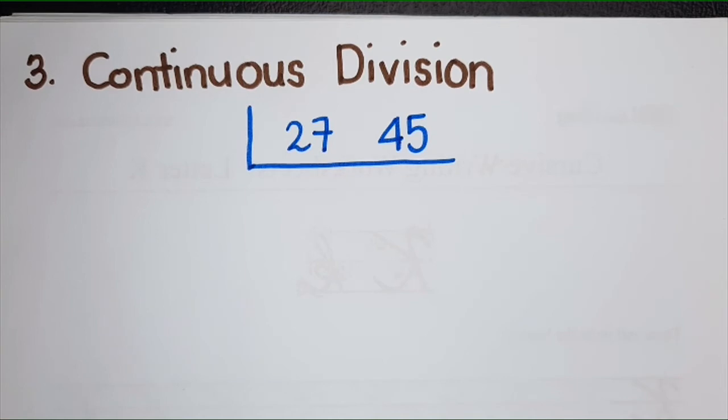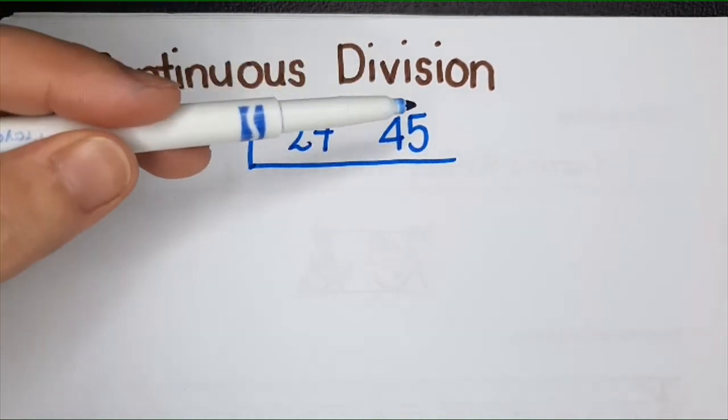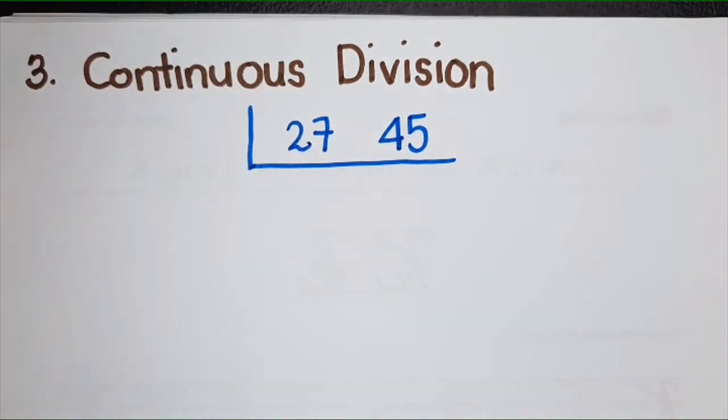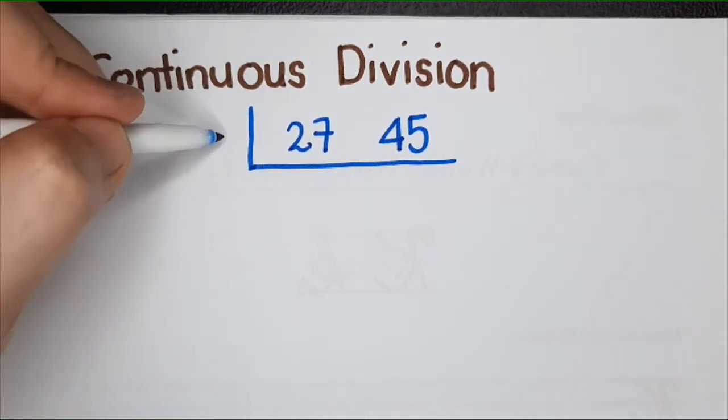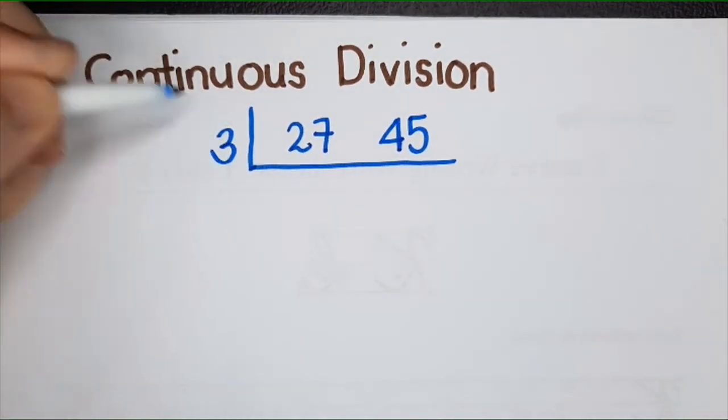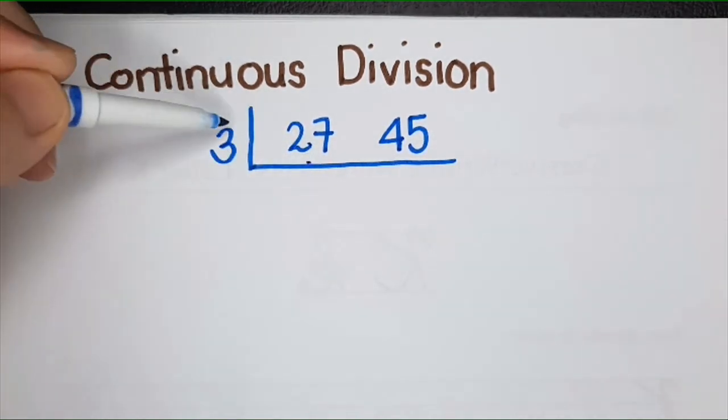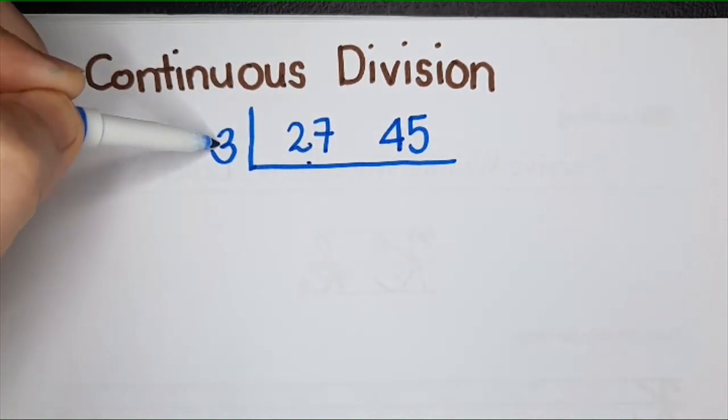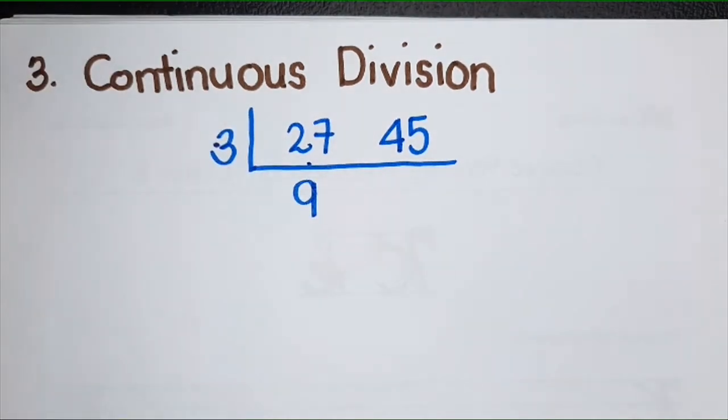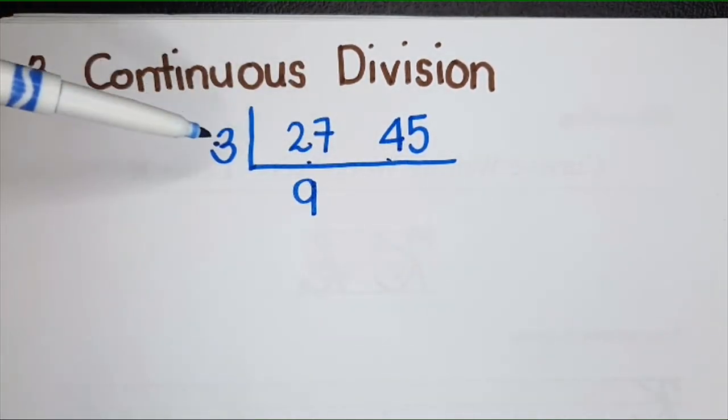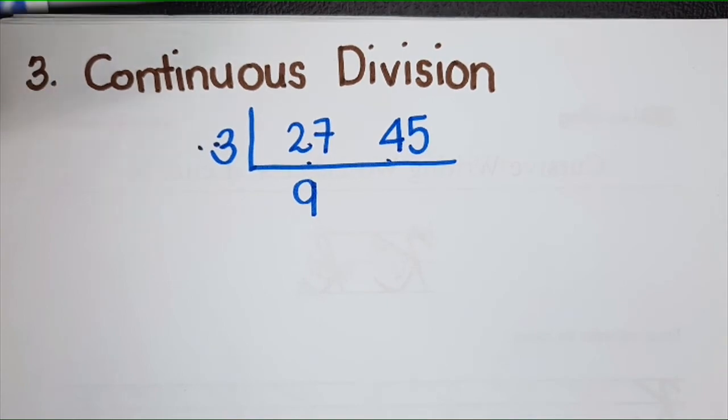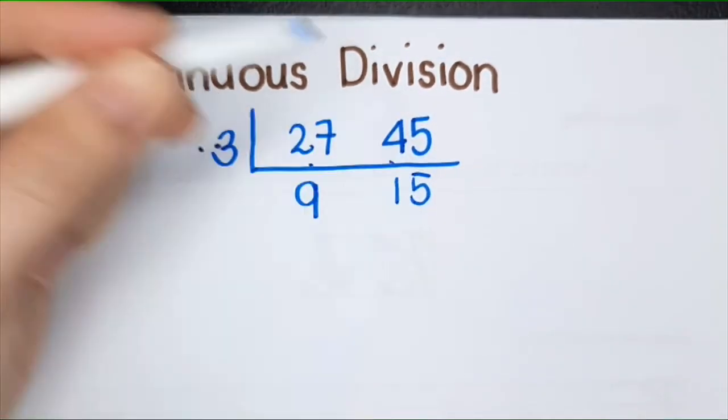Can you think of a number that can both divide 27 and 45? Any number? For example, 3. 3 can divide both 27 and 45. What is 27 divided by 3? It is 9. What is 45 divided by 3? It is 15.